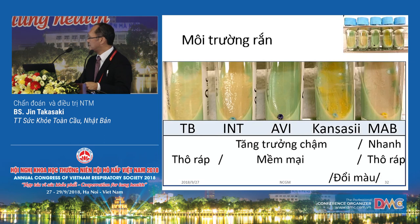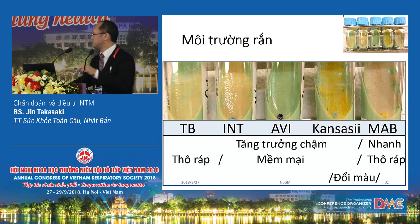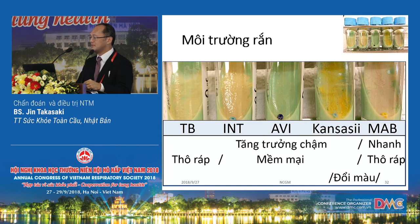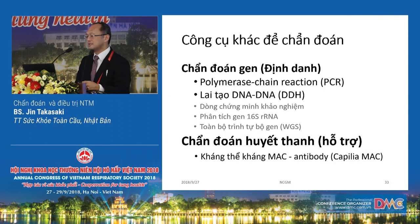On solid medium, there are differences between TB, MAC, kansasii, and abscessus. TB looks like a rough cord; MAC and kansasii are a smooth cord; abscessus also has a rough cord but grows very fast. Kansasii shows a yellow color change — this is called photochromatic change. When we see this, we suspect it is not TB or MAC. For final species identification, genetic diagnosis takes around one to two months, and a serological diagnosis method is also available.